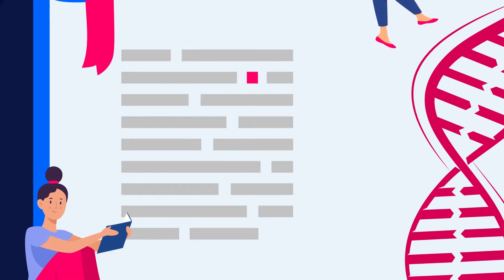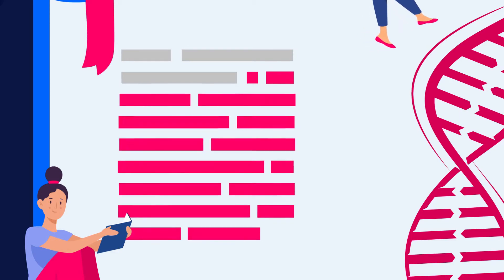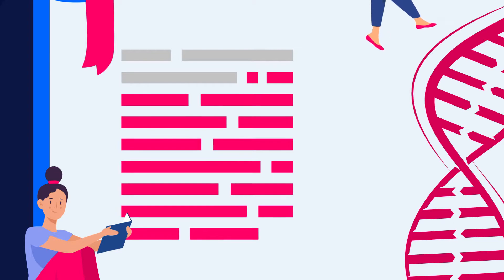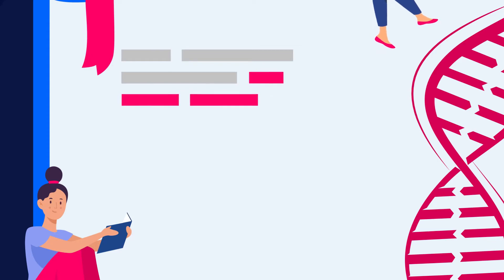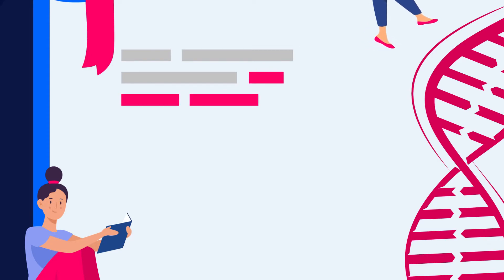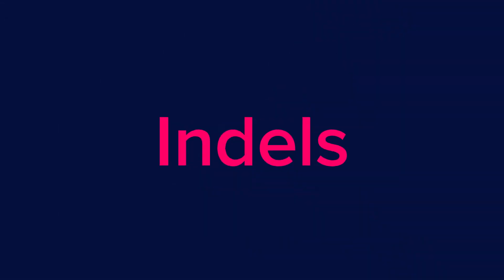SNPs are the smallest and most common form of genetic variation. Sometimes completely new sections of DNA are created, and other times complete sections of DNA are removed from your genetic code. Together, these kinds of genetic variants are referred to as indels.